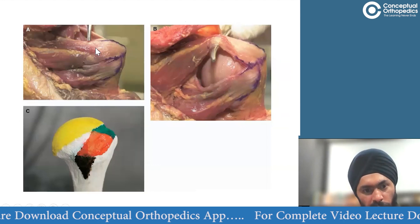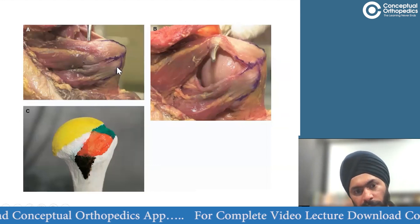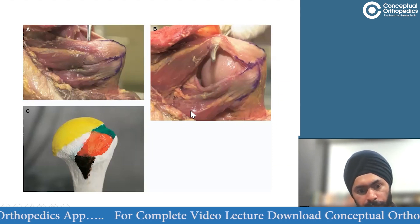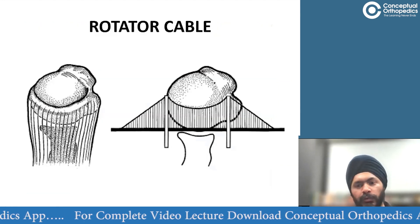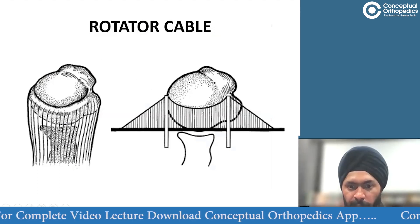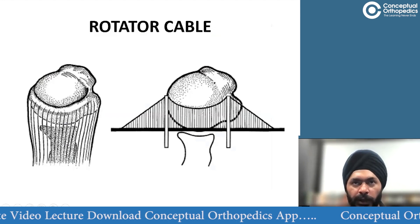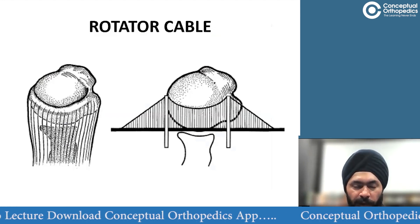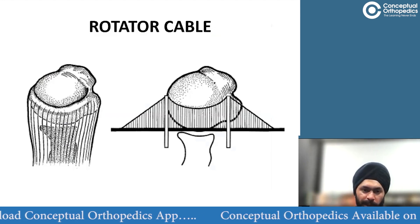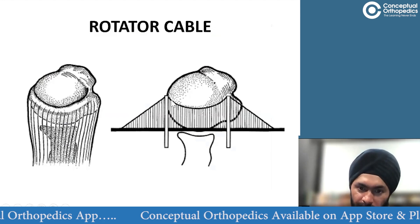Here are some diagrams showing the anatomy — posteriorly you can see supraspinatus, infraspinatus, and teres minor. Looking from the top is the supraspinatus. You should know the concept of the rotator cable, which is a thickening of the rotator cuff. There are five layers of the cuff, and the thickening in layers one and four constitutes the rotator cable.